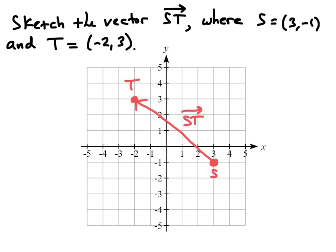We start by plotting the points S and T at the given coordinates. And since we want the vector ST, drawing a directed line segment that starts at S and ends at T.